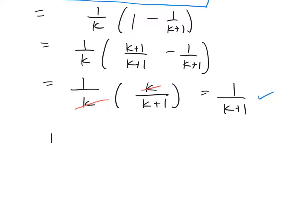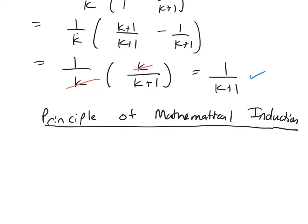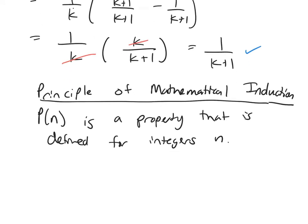So let's go over what mathematical induction is. The idea is that you have some property or some maybe formula. P of n is a property that is defined for integers. And then a is going to represent some fixed number.